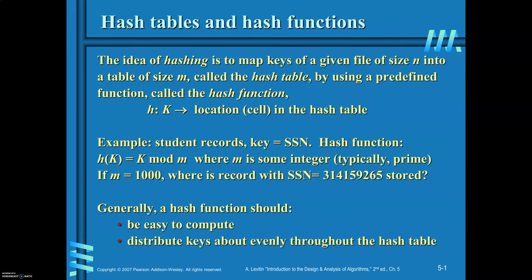The idea behind hashing is: you have n keys that are to be organized in a table of size m. This table is called the hash table. For that, define a hash function h(k) = k mod m. You are required to find the hash key value for every key of the data you are going to organize. m should be chosen as preferably a prime number. Whenever you define a hash function, it must be easy to compute and distribute keys evenly throughout the hash table.